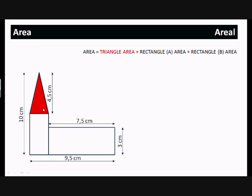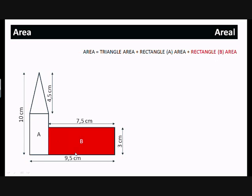We've broken the shape down into three simple shapes: a triangle and two rectangles. I'm calling the whole area the triangle area plus the area of rectangle A plus the area of rectangle B. Starting with the triangle, it's 4.5 centimeters high. We don't know how far it is along the bottom, but we can work it out. There's 7.5 at the top and 9.5 at the bottom, so the difference must be 2 centimeters. The triangle is 2 centimeters along the bottom.